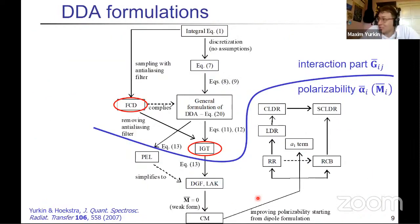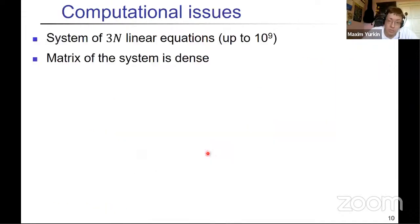Well, I showed you that DDA is easy, but actually there are many different options of, as I said, how to compute this G and alpha terms, and alpha is related to polarizability, and actually many terms for that, but they're usually not important. And by contrast, these terms like FCD and IGT, which is filtered coupled dipoles and integration of Green's tensor, they can make a lot of difference in some cases, but I won't have time to talk about it in details.